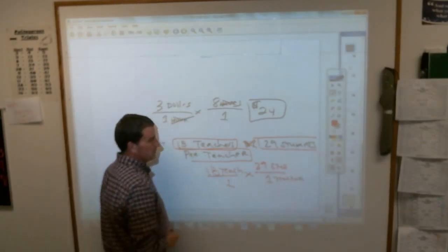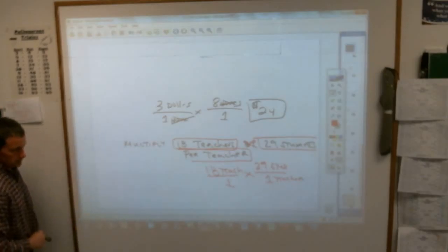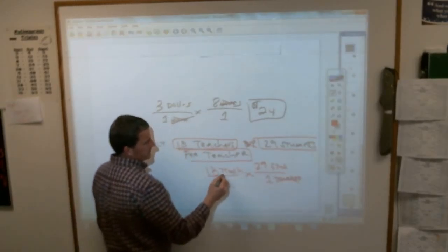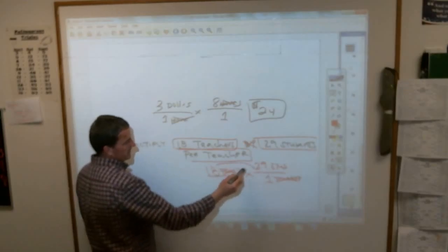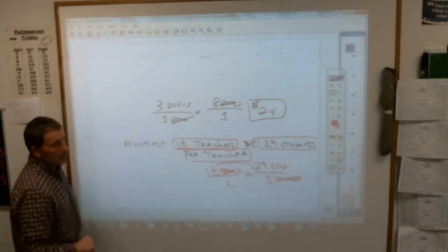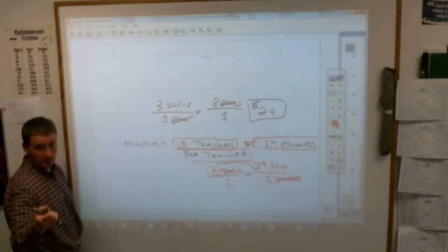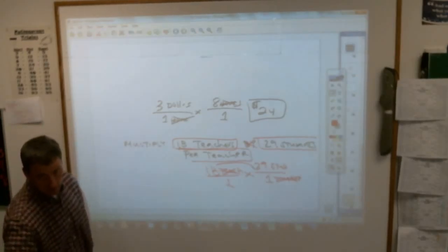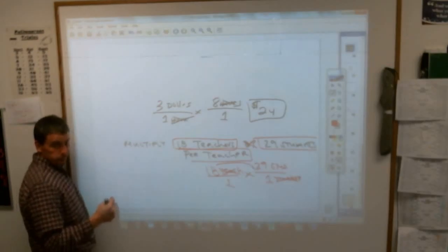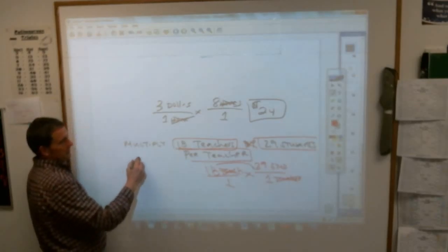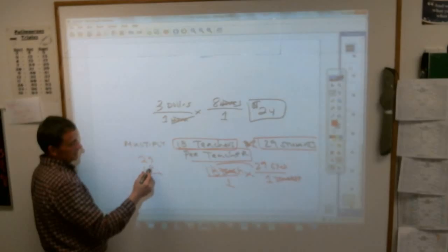And then on your paper, I'm going to see what gets crossed off. Elijah? Teachers, because it's the same label on top as on the bottom. And then you're going to multiply 18 times 29, which is the same thing as 18 times 30 minus 18, right? So 540 minus 18. 29 times 18 is 532. Let's check and see.